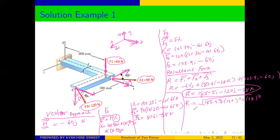Now that we have the resultant force, let's calculate the moment. Because all the forces are acting at different points, we do not use the resultant force to find the moment. Instead, we find the moment for each individual force separately and then sum them. The moment in vector form is always equal to R cross F, where R is the position vector showing where the force is applied relative to where we are taking our moment.